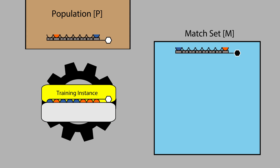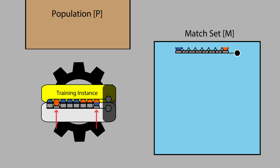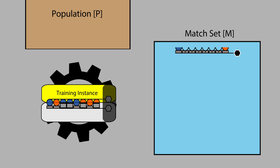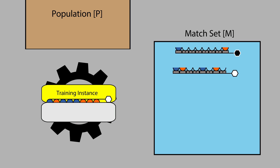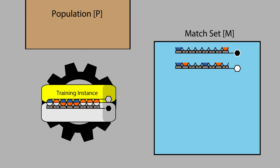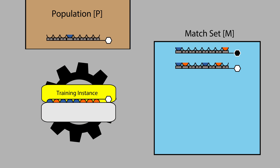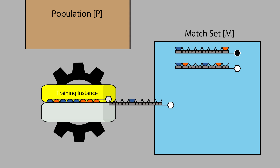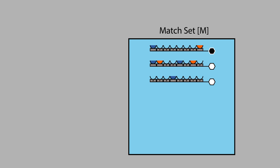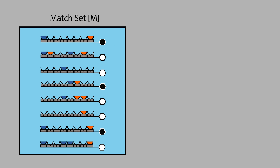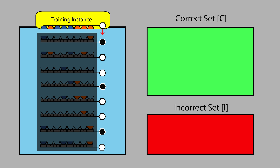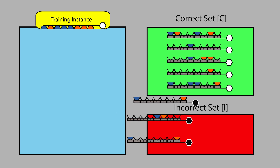Let's see a few other examples of matching. Next, the match set is divided into a correct set and an incorrect set. Rules that have a class prediction that matches the true class of the training instance form the correct set, and those that don't form the incorrect set.